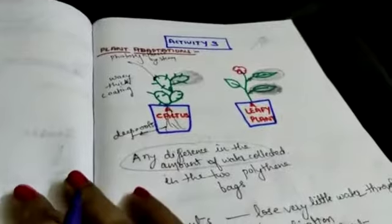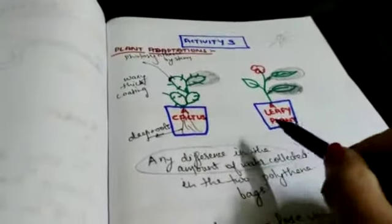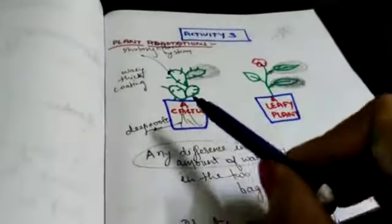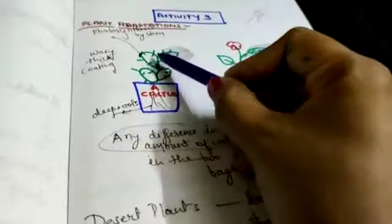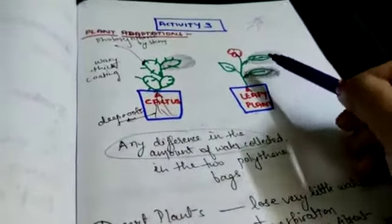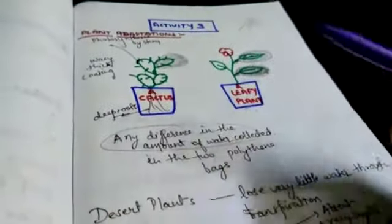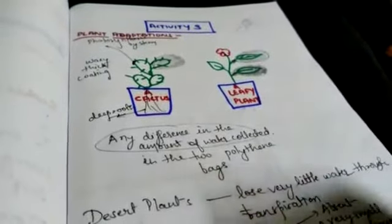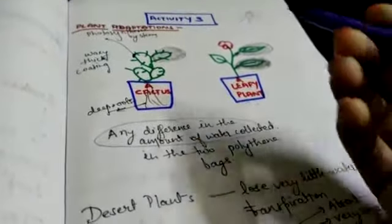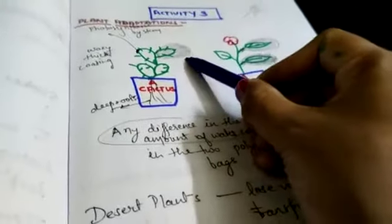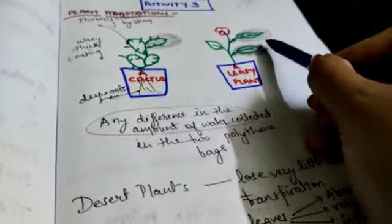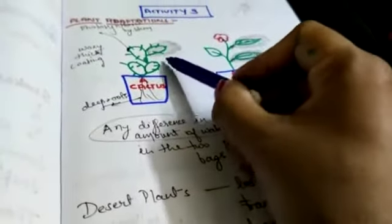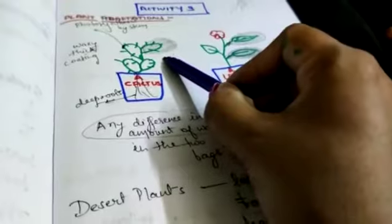This activity deals with plant adaptation. You have to take two plants, one of them is cactus, other one is leafy plant. Wrap them in polythene and keep them in sunlight. Then after two or three days, you have to see the amount of water collected in the polythene. Which one has more? Naturally here, transpiration water droplets are more as compared to this one. This means this plant has lost less water.